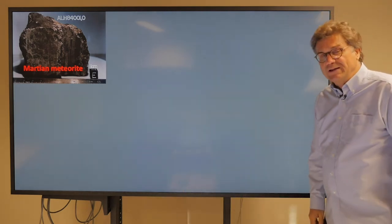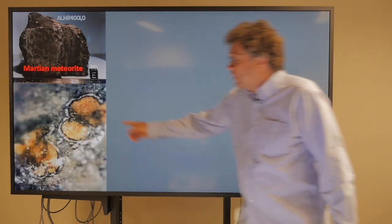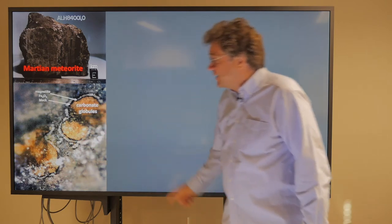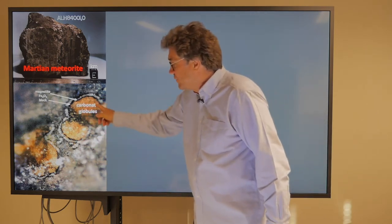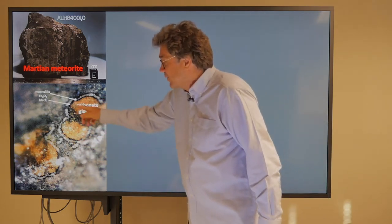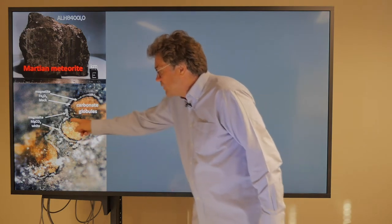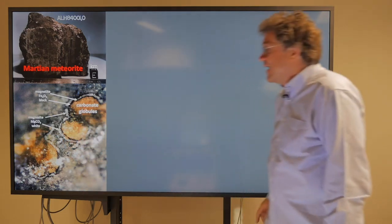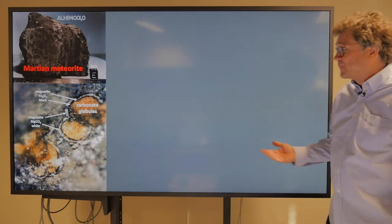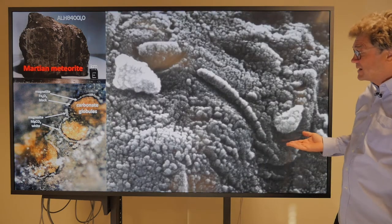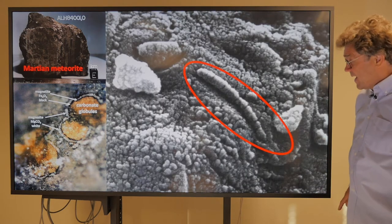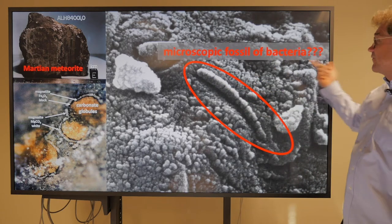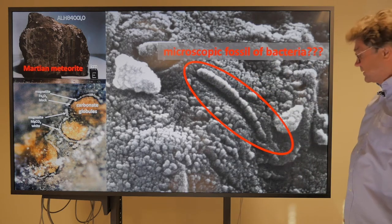If you look closely at this meteorite, you can find carbonate globules like this. The black rim here is called magnetite, and then the white rim here is magnesite. And if you blow up the surface, in some spots you can see things that look like a microscopic fossil of a bacterium.